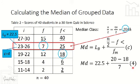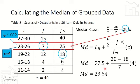Substituting: median equals 22.5 plus (40 over 2 minus 18) over 7, times 4. Computing: 20 minus 18 equals 2, divided by 7, times 4, plus 22.5. The final answer is 23.64, which is the median for Example 2.